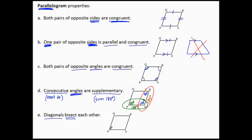Finally, the diagonals bisect each other. Here's one diagonal, here's another diagonal. Remember: 'bi' means two and 'sect' means cut, so cut into two congruent parts. This diagonal will be cut in half, and this diagonal will be cut in half.